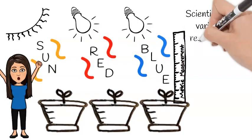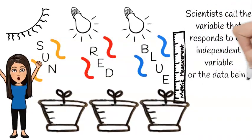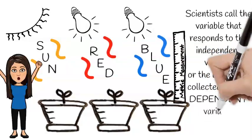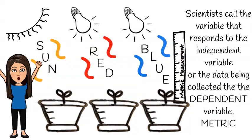Scientists call the variable that responds to the independent variable or the data being collected, the dependent variable. We use metric measurements in science.